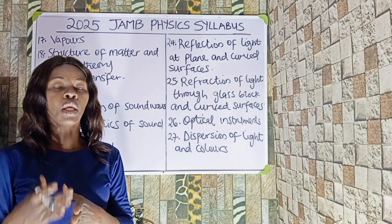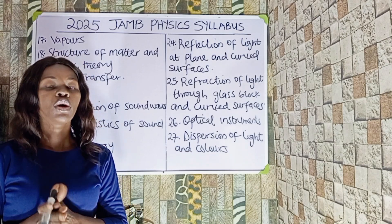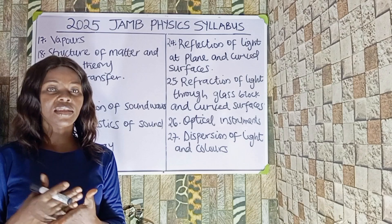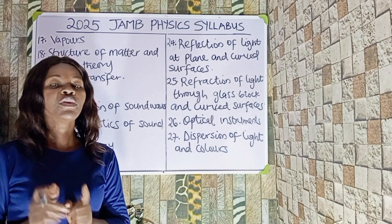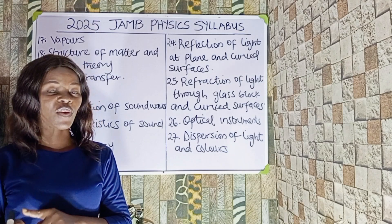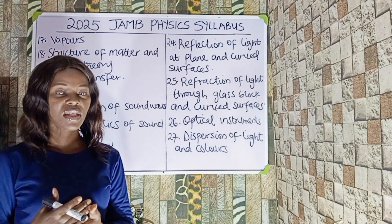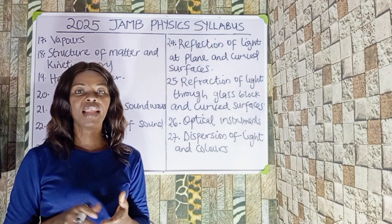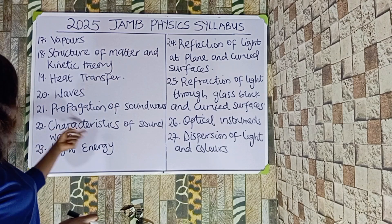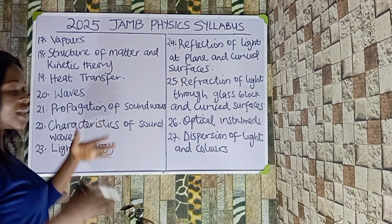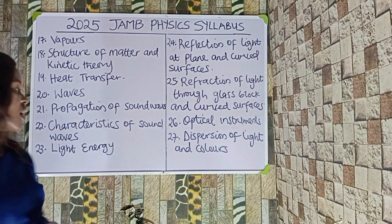Number twenty-one is propagation of sound waves. We should not forget that sound is produced by a vibrating body. A reflected sound is called an echo. We should also know the characteristics of sound, which are pitch, loudness, and quality — these are specified under the characteristics of sound waves.